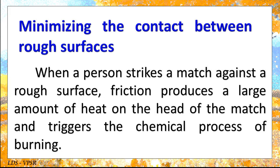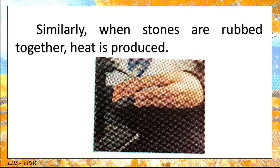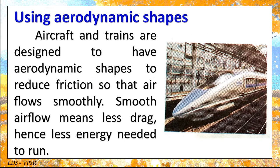Minimizing the contact between rough surfaces: when a person strikes a match against a rough surface, friction produces a large amount of heat on the head of the match and triggers the chemical process of burning. Similarly, when stones are rubbed together, heat is produced. Using aerodynamic shapes: aircraft and trains are designed to have aerodynamic shapes to reduce friction so that air flows smoothly. Smooth air flow means less drag, and hence less energy is needed to run.